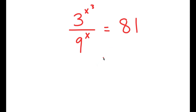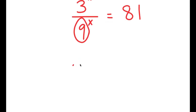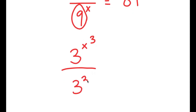In this equation, I have 3 to the power of x to the power of 3, over 9 to the power of x, is equal to 81. To solve this, I'm going to first write 9 as 3 squared, so I get 3 to the power of x to the power of 3, over 3 squared to the power of x, is equal to 81.